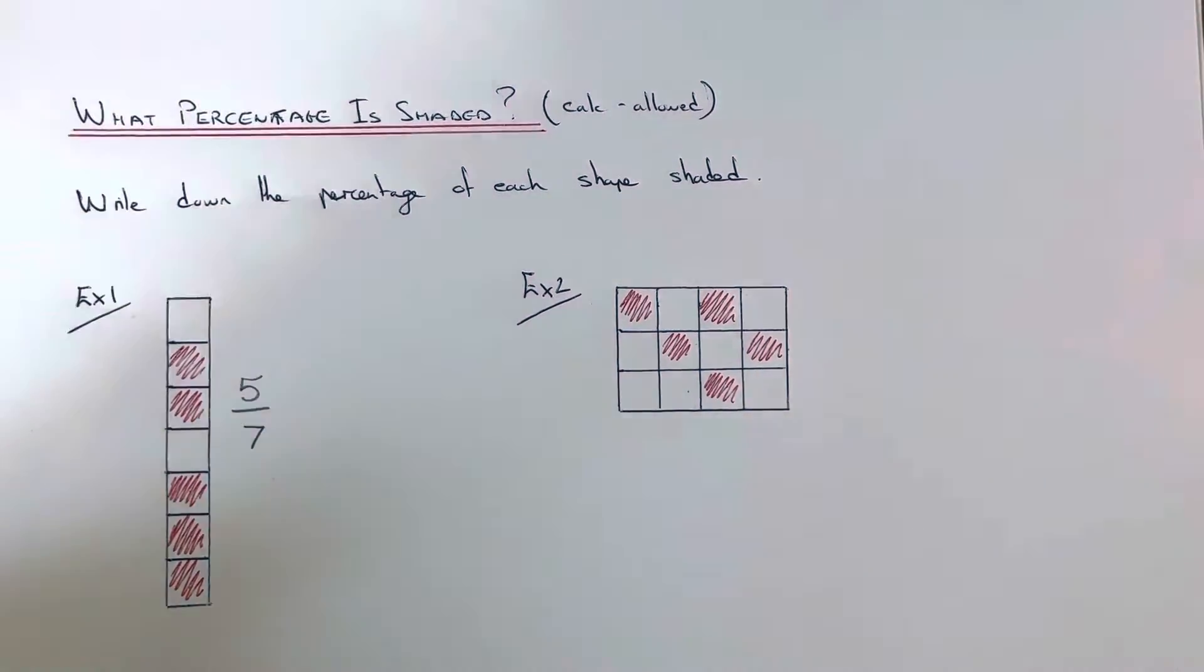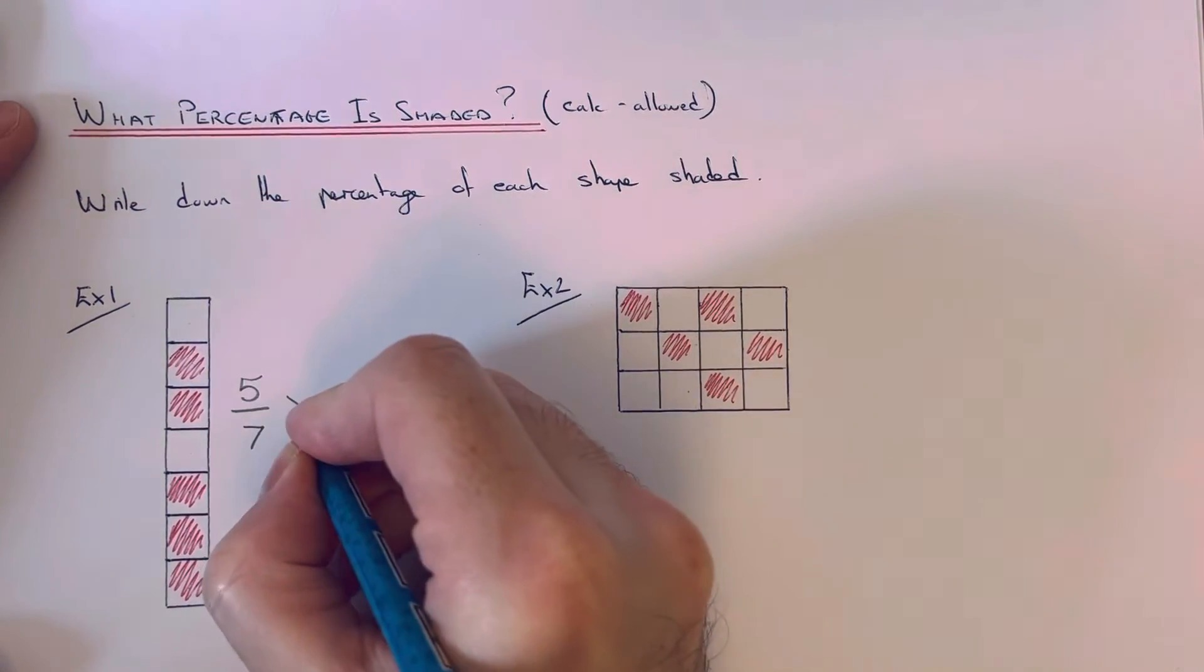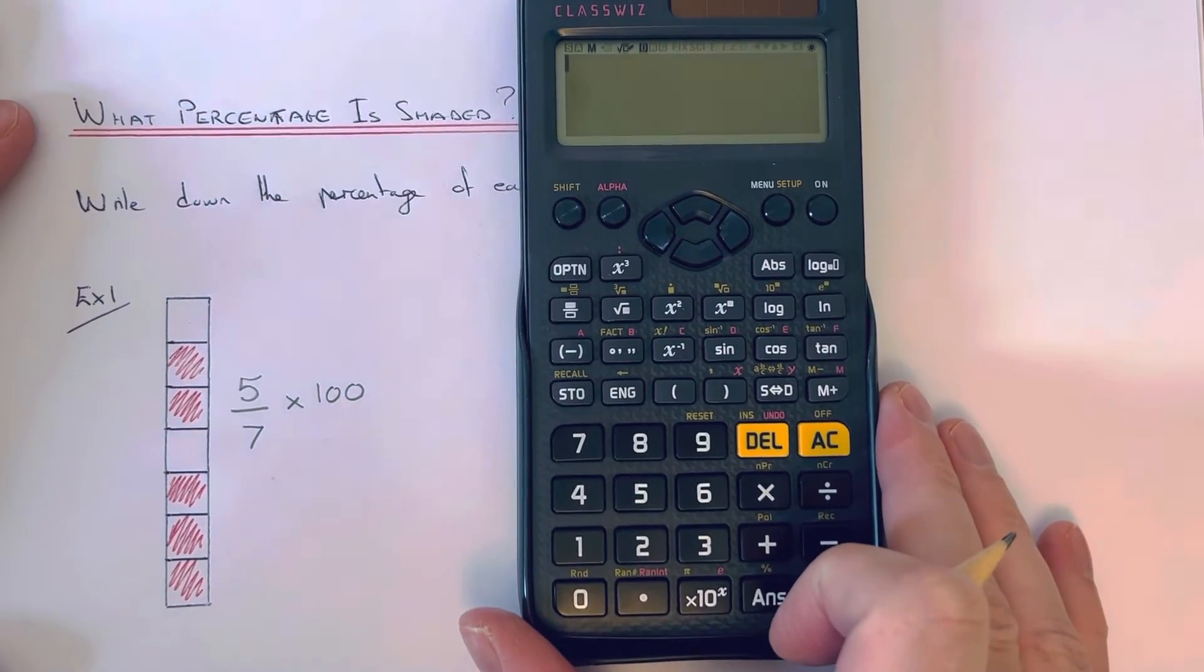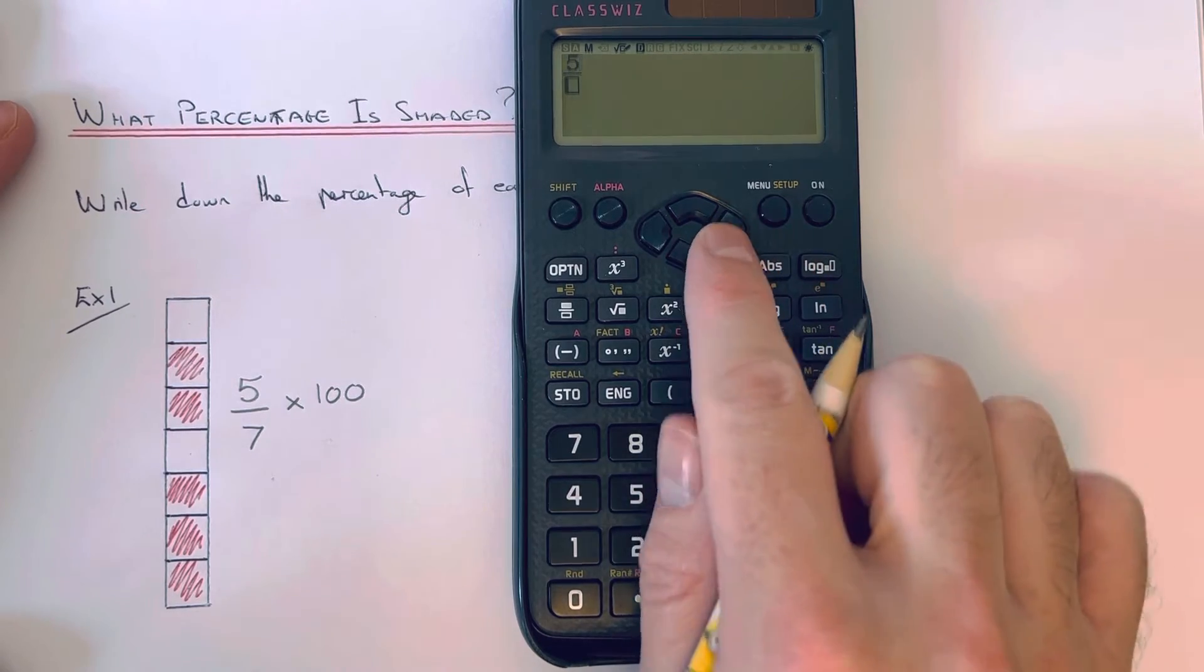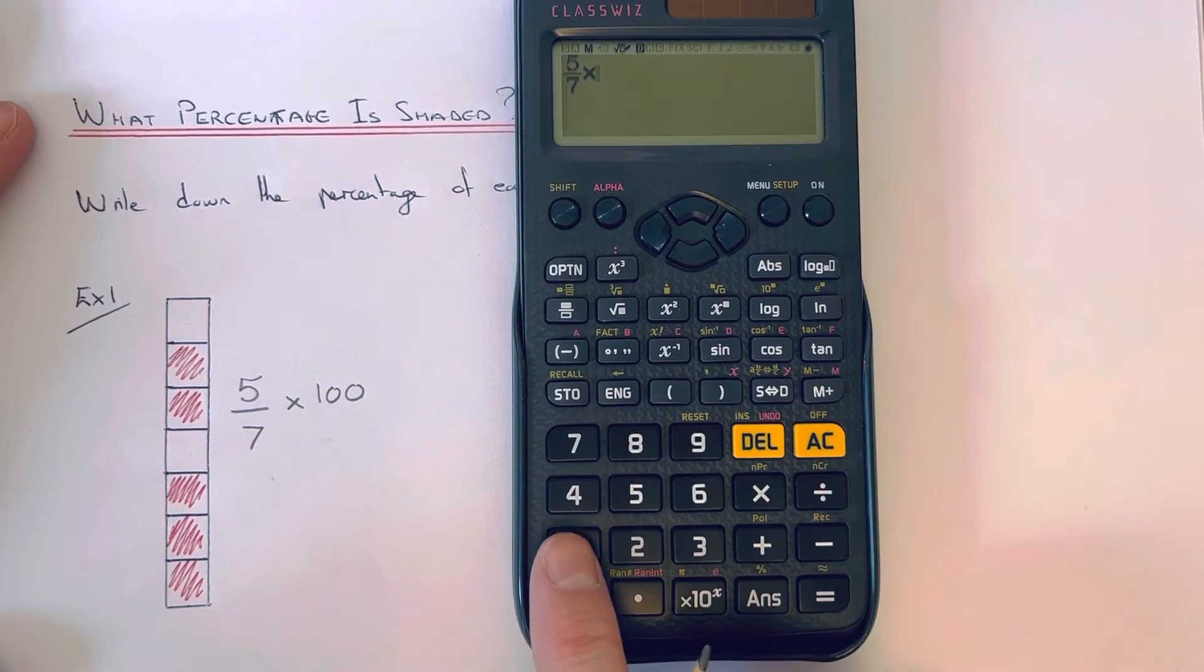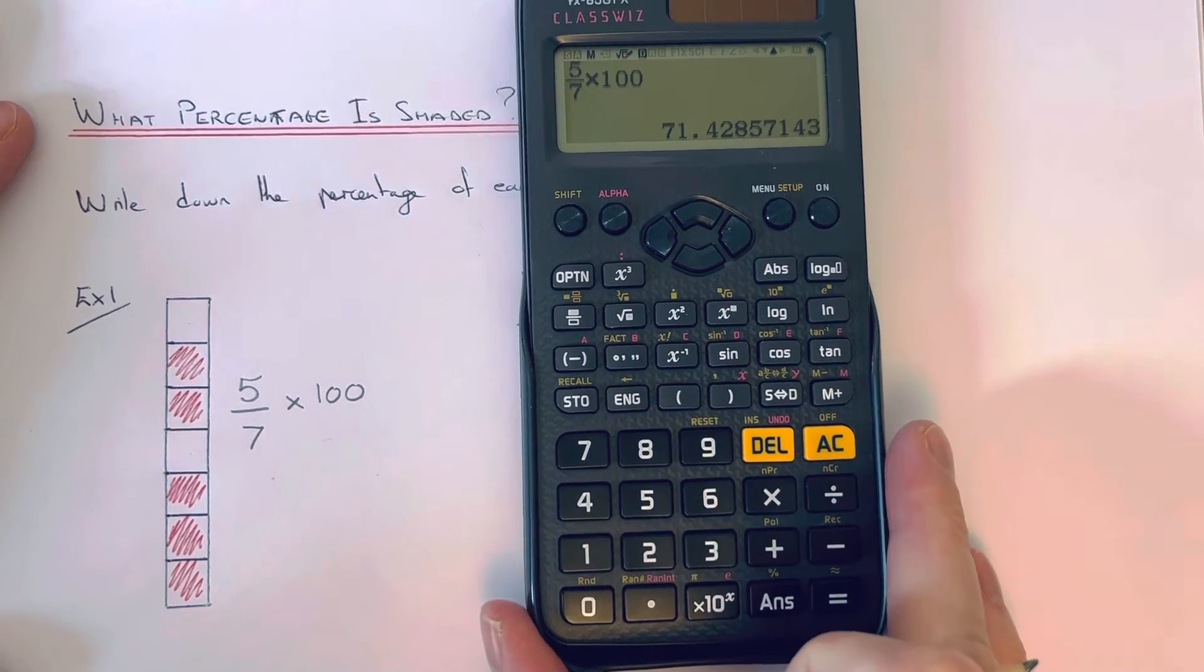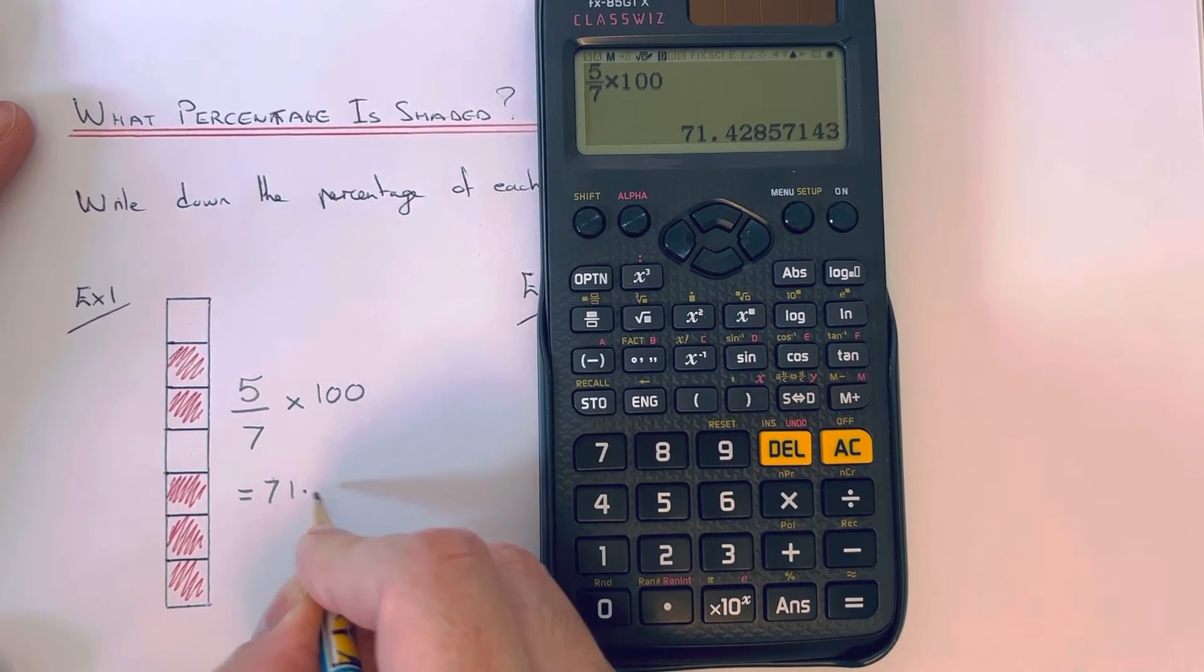So once you have your fraction, we just need to change it into a percentage, and you can do that by multiplying the fraction. So if you have a scientific calculator, then you can use your fraction key, which is here. So we just type in 5 sevenths and then times that answer by 100. Press equals. So I'm going to round it off to one decimal place. So it would be 71.4%.